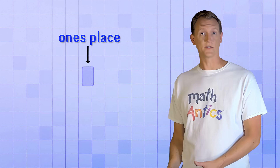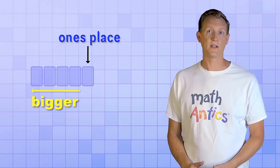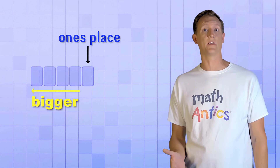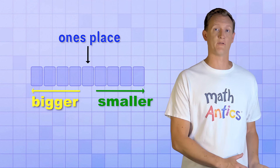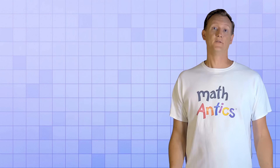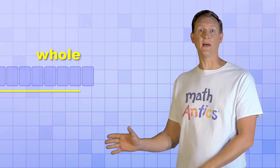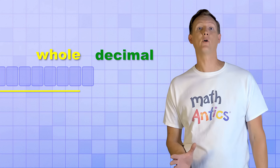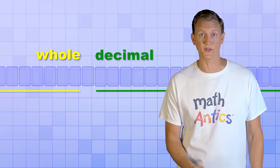Since the amounts that our number places represent get bigger and bigger as we go to the left, it makes sense that number places for counting smaller amounts — like parts of something that are less than 1 — will need to go on the right side of the ones place. That's where the decimal places are found. And just like the whole number places can go on forever to the left counting bigger and bigger groups, the decimal number places can go on forever to the right counting smaller and smaller parts or fractions.